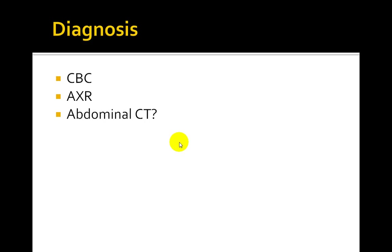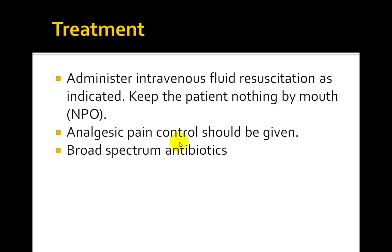However, sigmoidoscopy or colonoscopy should be avoided in early diverticulitis to prevent any risk of perforation. In patients with severe disease or those who show lack of improvement, an abdominal CT may be beneficial to reveal an abscess or free air.